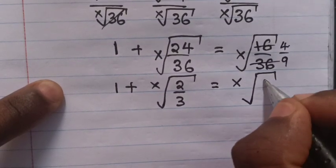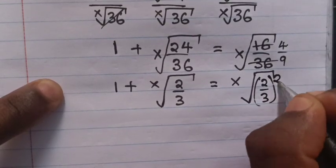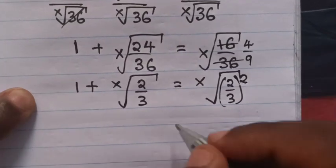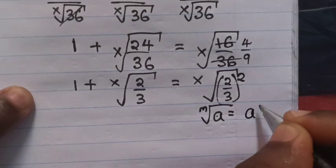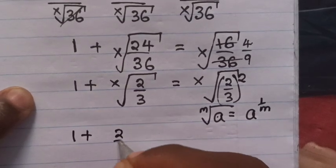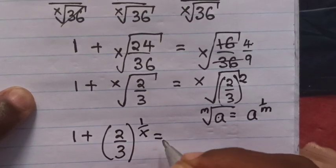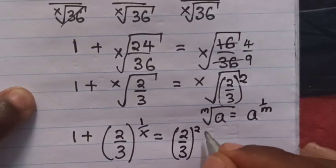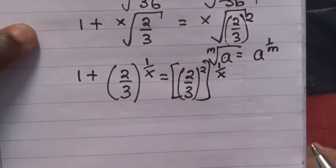So it will be root of x inside is (2/3) squared. Here, 2 squared is 4 and 3 squared is 9. Then we apply the rule that the m-th root of a equals a to the power of 1 over m. So our equation will be 1 plus (2/3)^(1/x) equals (2/3)^2 ^(1/x).